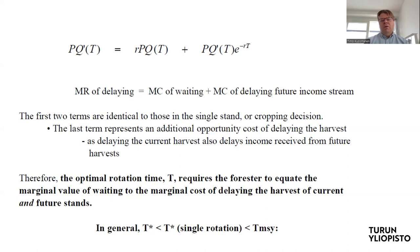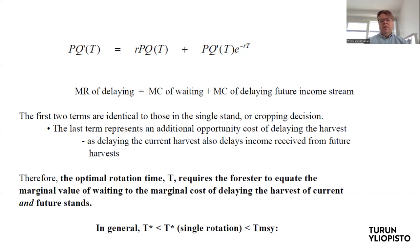What about the interest rate R? R does not enter the left-hand side of the model — it is only on the right-hand side. So if the interest rate increases, the marginal cost of waiting increases. There is a higher opportunity cost, and the forest should be harvested quicker. Therefore, an increase in the interest rate or discount rate decreases the optimal rotation time T. The opposite is also true: if R decreases, the marginal cost of waiting is smaller, so it is optimal to let the forest grow a little bit longer.